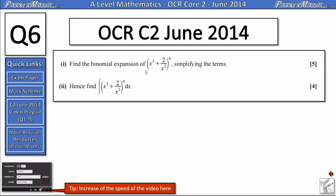In part 1 we need to find the binomial expansion of, in a bracket, x cubed plus 2 over x squared, all to the power of 4, simplifying the terms. And then in part 2 we need to find the integral of that function as well.